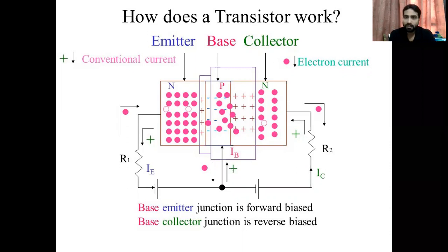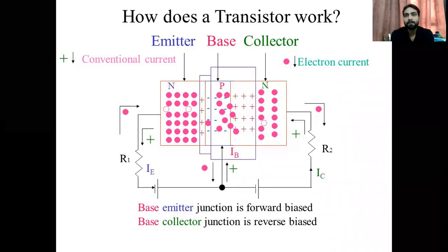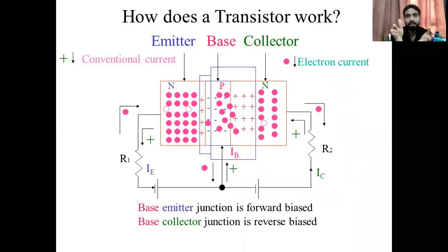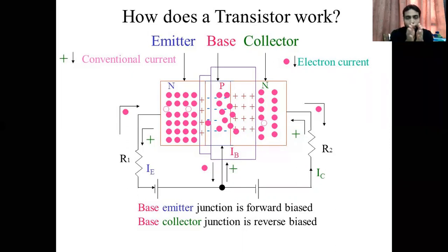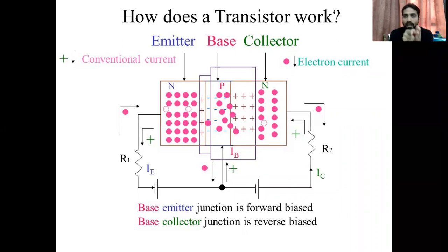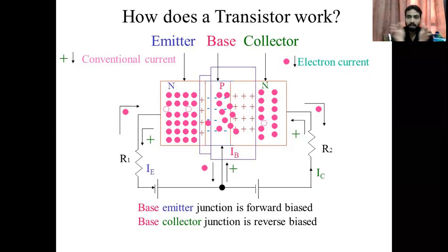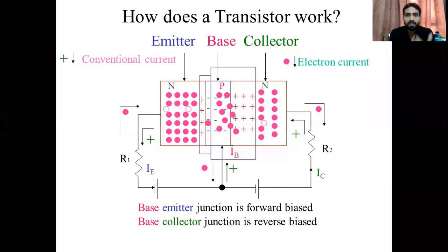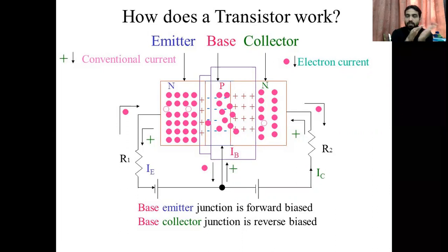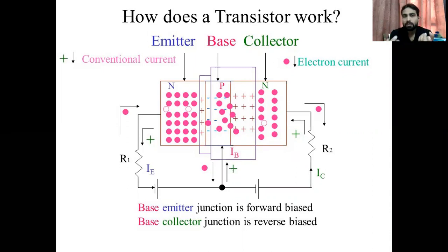The transistor structure is like a sandwich — one layer of bread, another layer of bread, with a filling in between. One type of material is on either side and another type is in the middle. However, the fabrication is not physically stacking layers. Instead, we start with one type of semiconductor substrate and diffuse acceptor and donor impurities to create the structure.